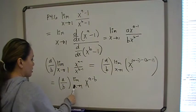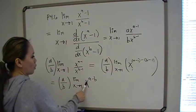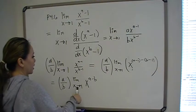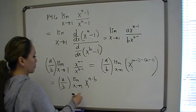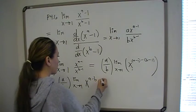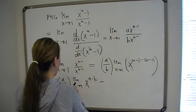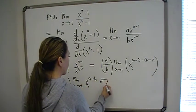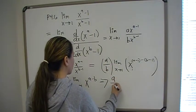Now we can see that as x goes to 1, this goes to 1 raised to the a minus b power, and 1 raised to any power will be 1. So the limit of x to the a minus b is 1, therefore we have 1 times a over b, and the limit approaches a over b.